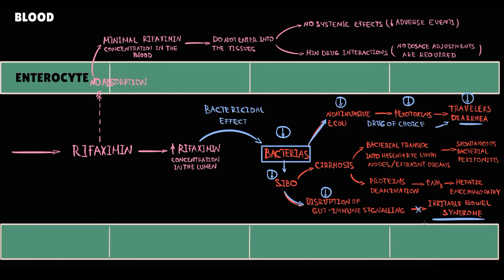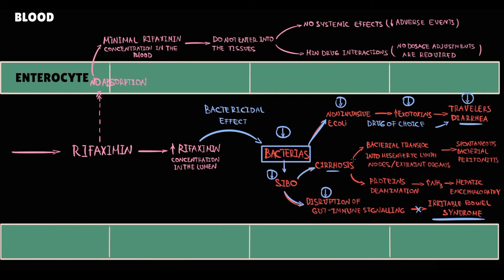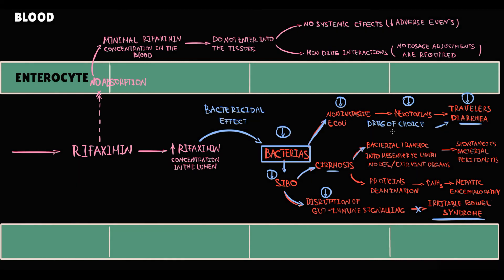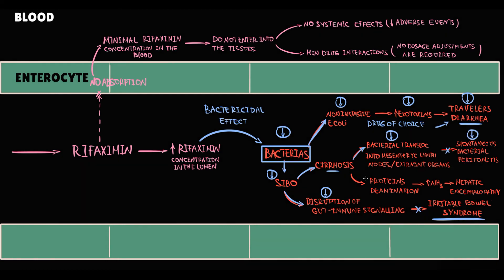Rifaximin can be used in treatment of patients with cirrhosis. Because by decreasing the amount of bacteria, we prevent bacterial translocation, thereby we decrease the risk of spontaneous bacterial peritonitis. And also by decreasing the amount of bacteria, we decrease ammonia production by the bacteria, thereby we prevent hepatic encephalopathy. And for the treatment of hepatic encephalopathy, rifaximin is generally used in combination with lactulose.